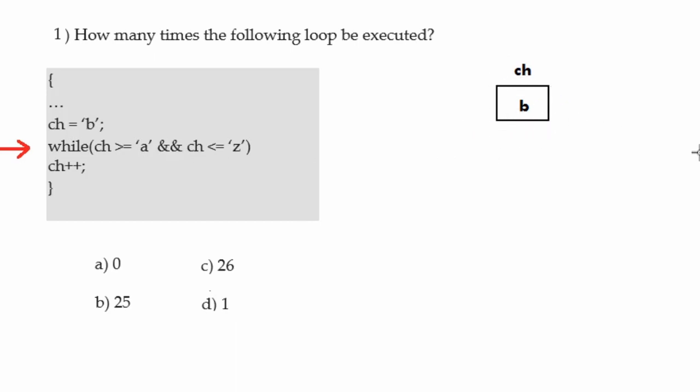In the first iteration the condition is tested. Since 'b' lies between 'a' and 'z', it is greater than equals to 'a' and less than equals to 'z', so the loop executes and ch is incremented to 'c'. The condition is again true because 'c' lies between 'a' and 'z', so ch is incremented again to 'd'. This loop has now been executed two times. It will continue until ch becomes greater than 'z'.